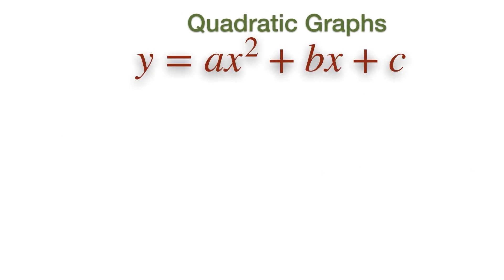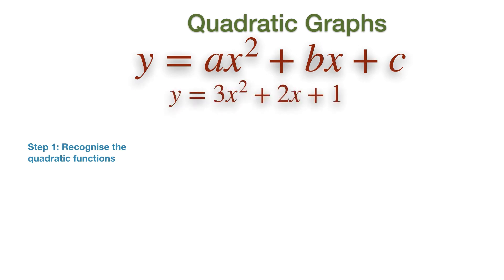In order to draw a quadratic graph, we must follow three basic steps. In step 1, we must first recognize that the graph is quadratic and gives rise to the parabolic curve. We must look for signs that the function is quadratic by looking at its constants and the power of X in the equation. For example, Y equal to 3X squared plus 2X plus 1 is an example of a quadratic function, as it is of the form Y equal to AX squared plus BX plus C.